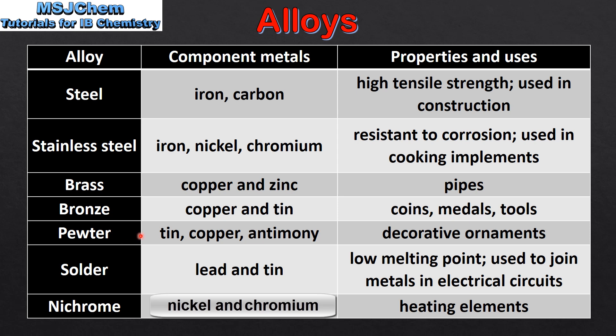Pewter is composed of tin, copper and antimony and is used in decorative ornaments. Solder is made of lead and tin and is used to join metals in electrical circuits. And finally, nichrome is composed of nickel and chromium and is used in heating elements.